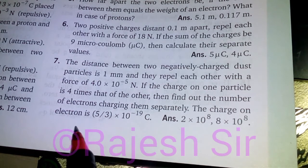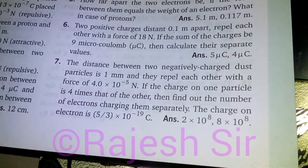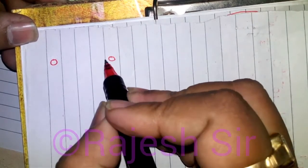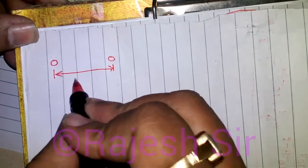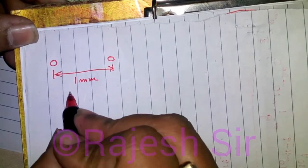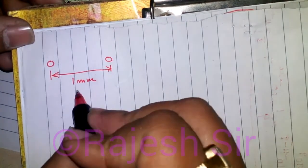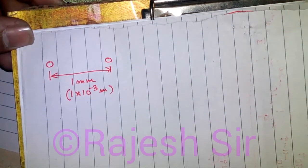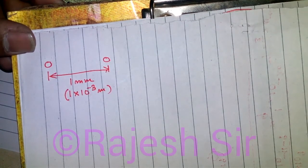The charge on an electron is 5 by 3 into 10 to the power of minus 19 coulomb. As per the question, we have got two dust particles separated by a distance of 1 mm. All distances must be taken in SI system of units, so 1 mm becomes 1 into 10 to the power of minus 3 meter.